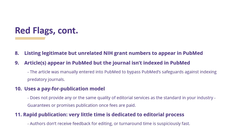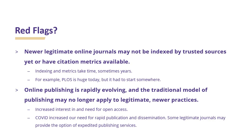Eight, the journal lists legitimate but unrelated NIH grant numbers so that they appear in PubMed. Nine, articles appear in PubMed but the journal is not indexed in PubMed. Ten, they use a pay-for-publication model. Eleven, rapid publication — very little time is dedicated to the editorial process. There are some things that appear to be red flags but may not be. For example, newer legitimate online journals may not be indexed by trusted sources yet or have citation metrics available.